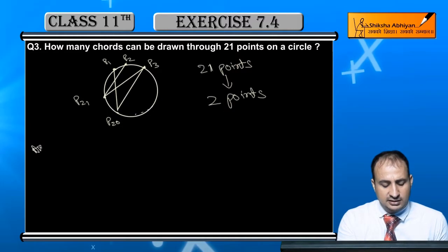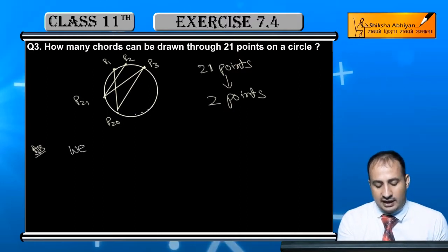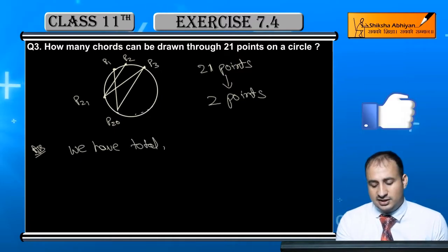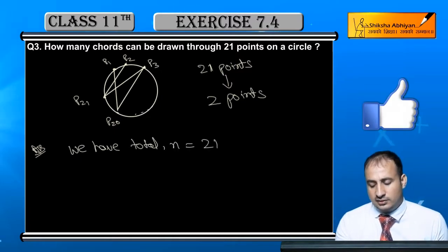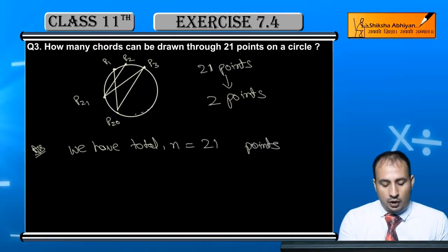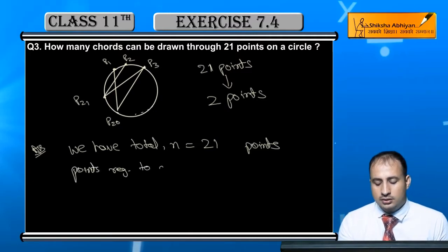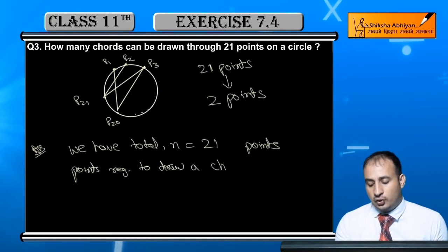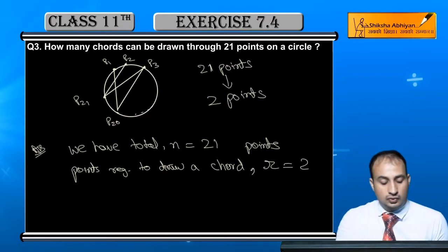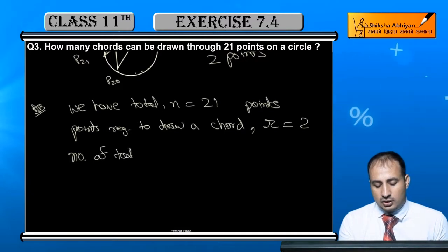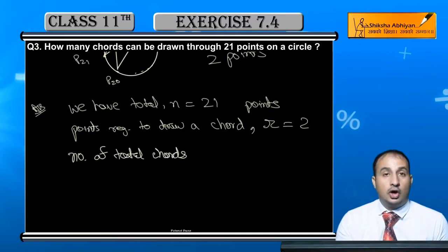So we have total n equal to 21 points. Now points required to draw a chord - how many points are needed to draw one chord? I'll take that as r, which is equal to 2. So number of total chords...